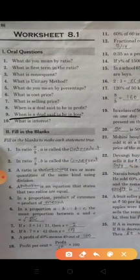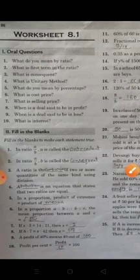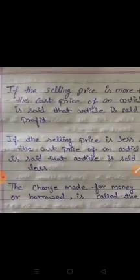Question number nine, when is a deal said to be a loss? So opposite of profit. So if the selling price is less than the cost price of articles, it is said that article is sold at a loss.